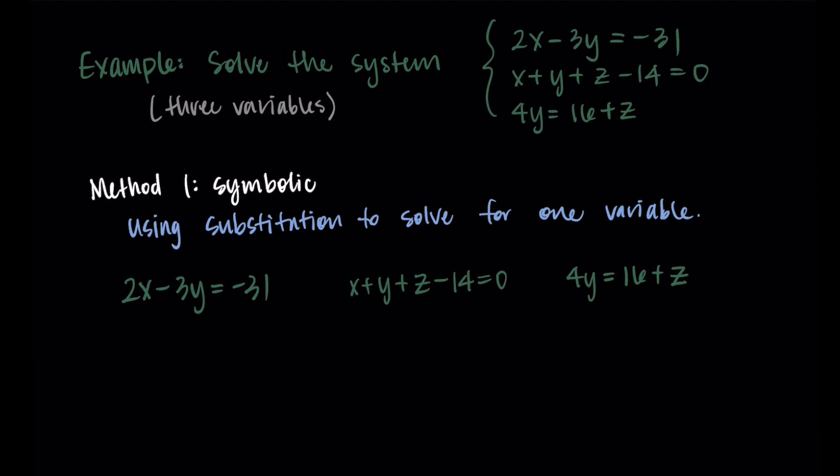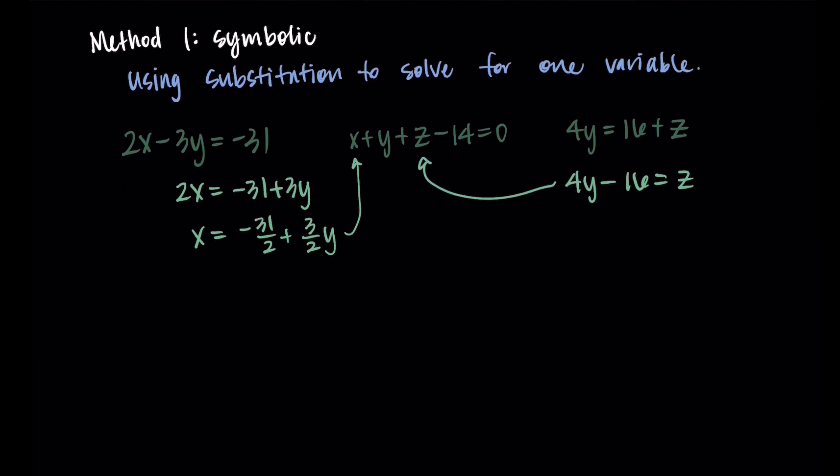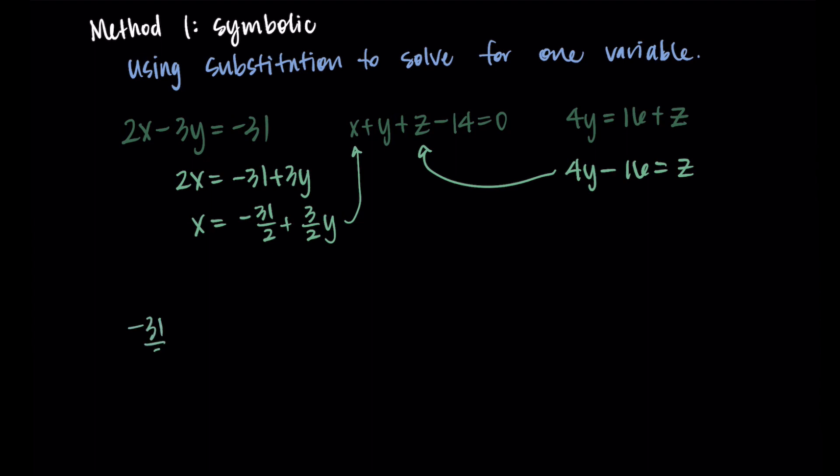Let's do this example. I'm going to take the first equation, 2x minus 3y equals negative 31, and I'm going to solve for x. So I'll add the 3y over to the right hand side, and I'll divide everything by 2. So I'm getting x equals negative 31 over 2 plus 3 halves y. Then I'm going to do the same thing with my third equation where I'm going to solve for z. So I'll subtract this 16 to the left hand side, I'm getting 4y minus 16 equals z. So now I have an x and a z equation, and I'm going to substitute those into my middle equation.